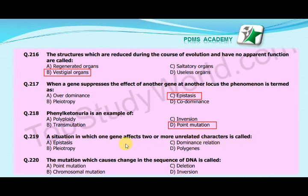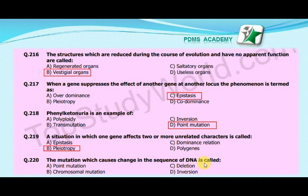Our next MCQ is: A situation in which one gene affects two or more unrelated characters is called — A. Epistasis, B. Pleiotropy, C. Dominance relation, D. Polygenes. The correct answer is B. Pleiotropy.